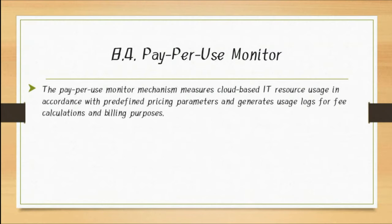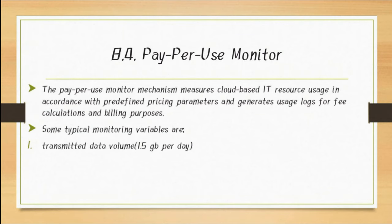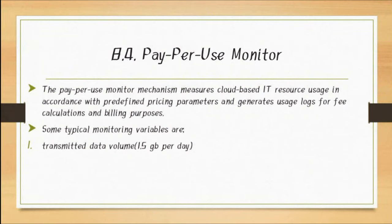Some typical monitoring variables are: first, transmitted data volume — how much data volume is used for a specific service. For example, just like in 2022 we use 1.5 GB per day on a normal smartphone, or 2 GB, 5 GB, or 10 GB per day depending on usage.